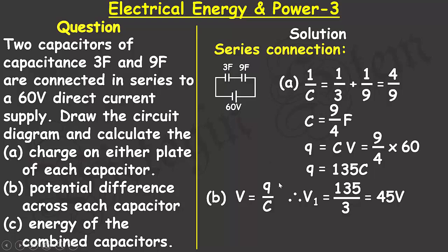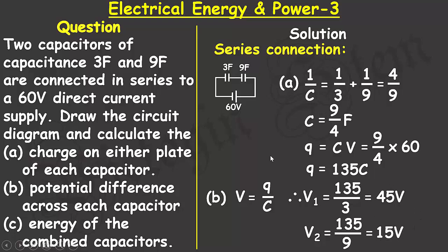The potential difference across the second capacitor (9 farad) is V₂ = 135/9 = 15 volts. The sum of both potential differences — 45 + 15 — equals 60 volts, which matches the supply voltage given in the question.